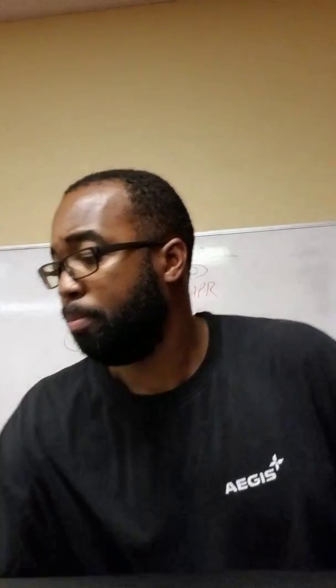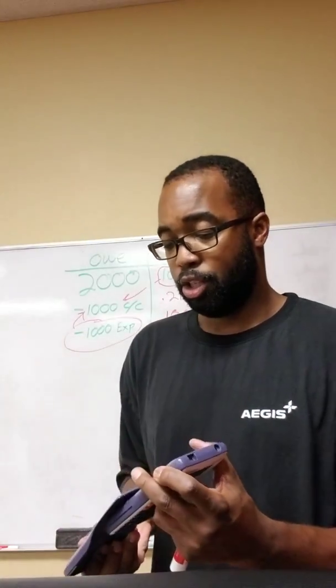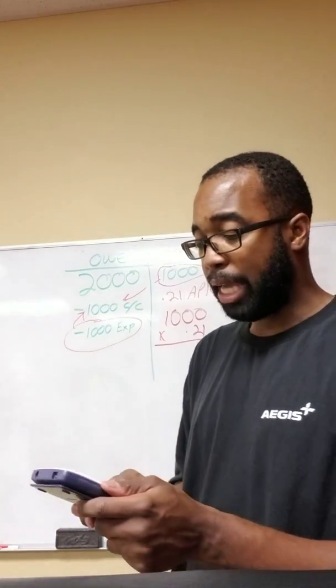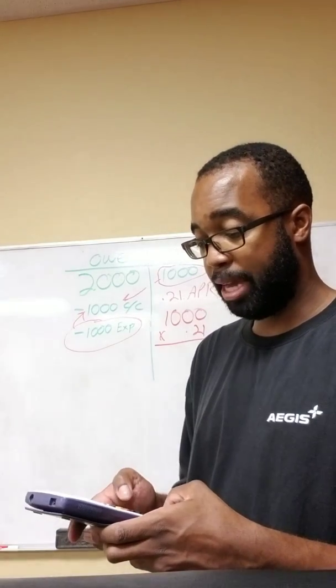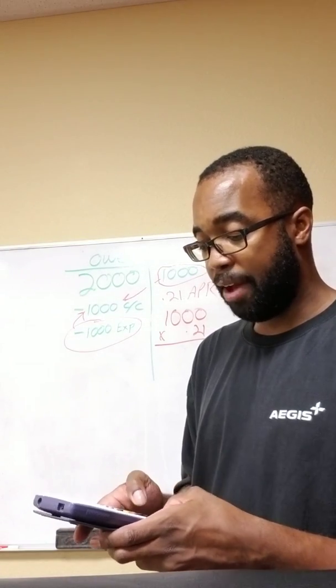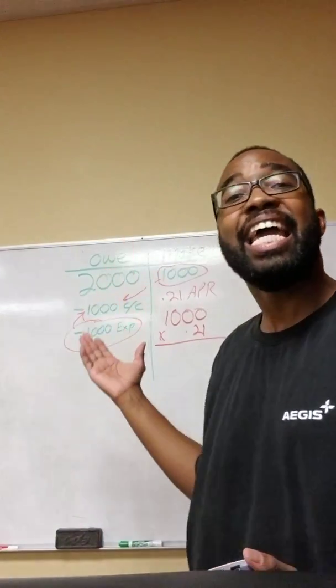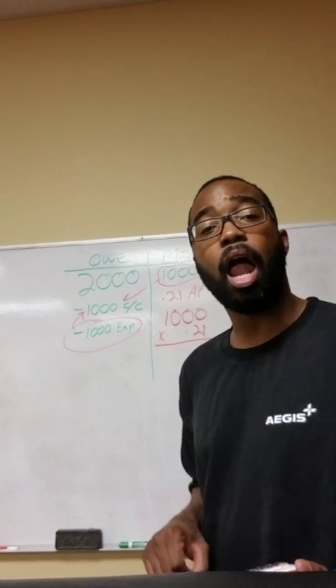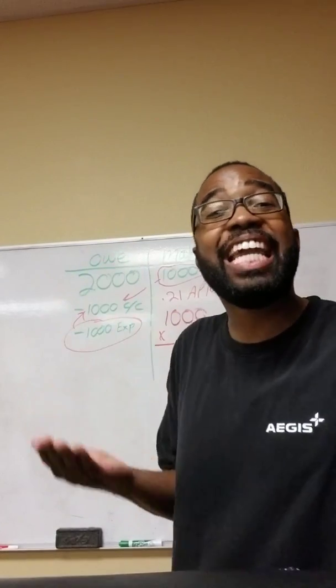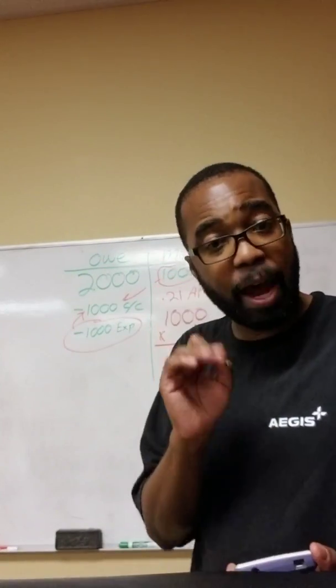You're going to multiply that. Don't worry, I've got an old school calculator here that's going to go ahead and multiply that for you guys so that you don't have to do it. That's $210. Now remember that 21% is annual. So that's $210 in interest a year. What we need to do is divide it by 12. Why? Well, because that's going to be 12 months in a year.